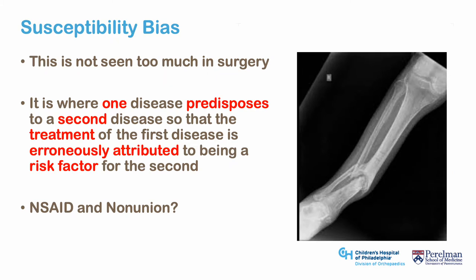Susceptibility bias is more commonly observed in medicine than surgery, but it is important to be aware of and fits under the category of considering other possibilities. In observational research, findings are correlational and not causal. Susceptibility bias is where one disease predisposes a patient to a second disease, and so treatment for the first disease is attributed as a risk factor for the second, when the second was merely a byproduct of the first. A consideration is NSAID use with non-union: some animal studies showed NSAIDs as a risk factor, but subsequent studies did not, raising the possibility that the fracture itself — not the medication — put the patient at risk.